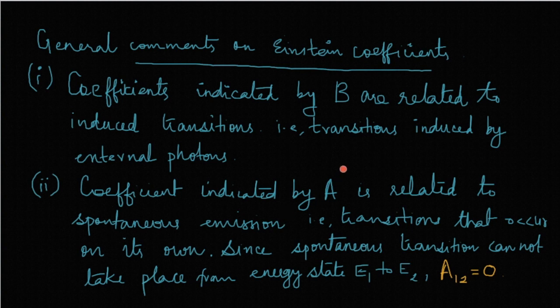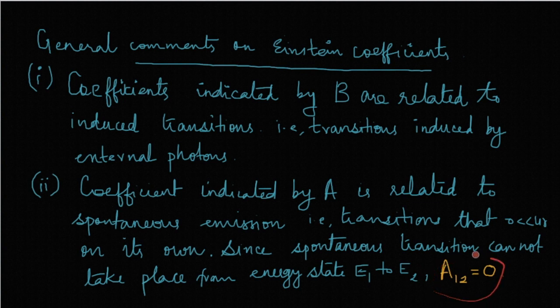The coefficient indicated by A is related to spontaneous transitions, that is, transitions which occur on their own without the assistance of an external agent. Since spontaneous transitions cannot take place from E1 to E2 (lower to higher energy), we do not have a coefficient A12. So A12 is always zero.